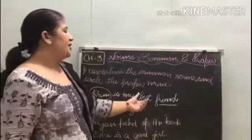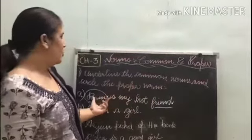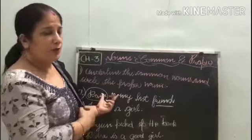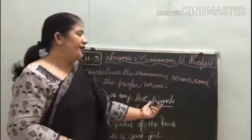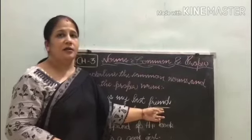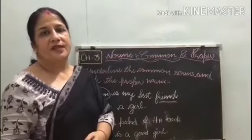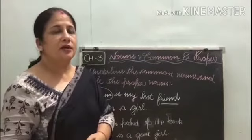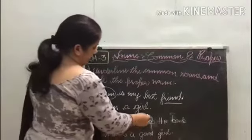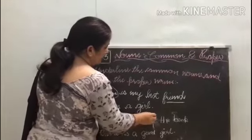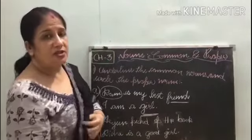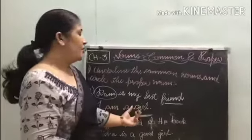Ram is my best friend. So what is the boy's name? Ram — that is the proper name, the special name. And 'friend' — what is the common name, the general name? Common noun. Next sentence: I am a girl. What is 'girl'? Common name. Do you know which girl it is? No — it is a general name. Common noun.